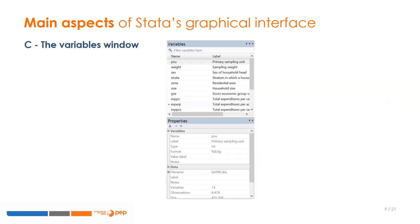The variable window lists the names of all variables included in the currently open data file, as well as their label names and format. You can click on a variable to display a menu that allows you to rename the variable or add notes. You can double-click on a variable to enter it in the commands window.